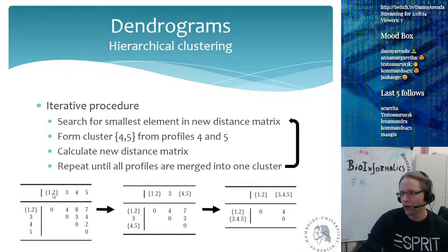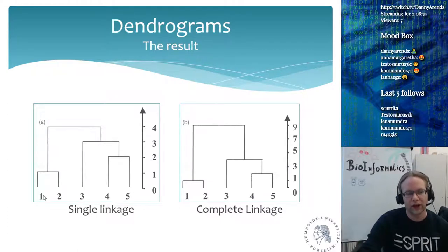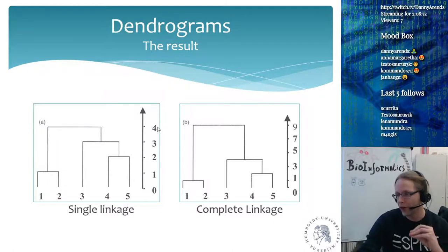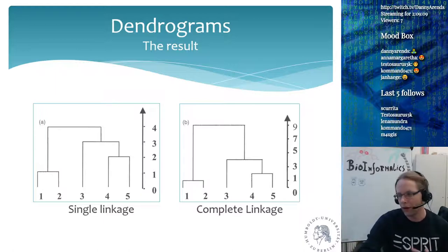So you go from: one is most similar to two, then four is most similar to five, then three joins the cluster of four and five, and finally everything merges at the root. With single linkage, one and two are closest together. With complete linkage the structure is the same but the y-axis scale changes — single linkage brings things closer together since you look at the most similar element, while complete linkage spreads the scale because you look at the most dissimilar objects. In R you can use hclust and specify which of the three linkage methods you want.